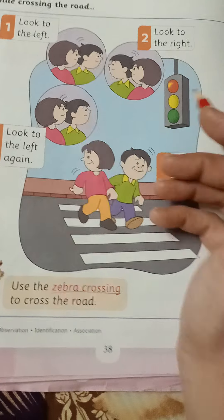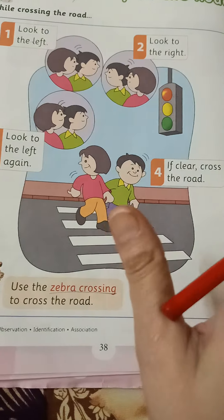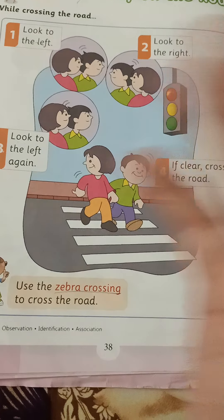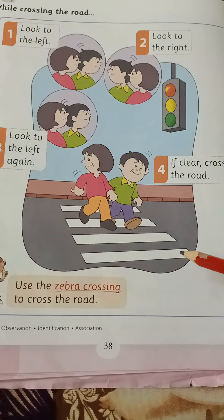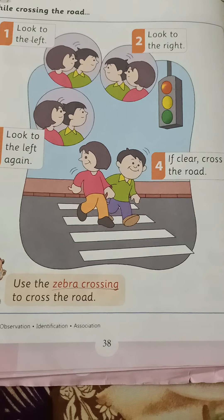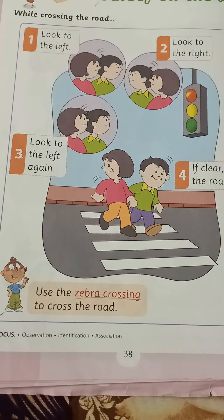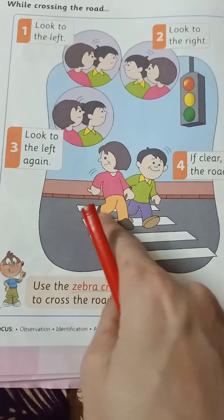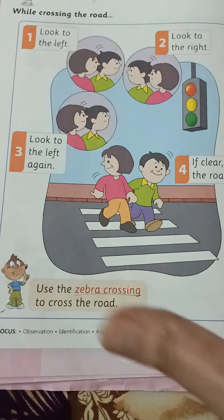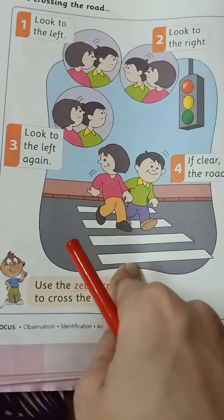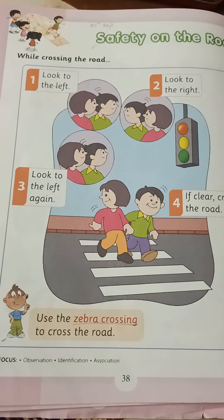When the red signal on the traffic light is on, no vehicles can pass through. That means the road will be clear, and you can cross at that time. One more very important thing: when you cross the road, always use the zebra crossing — the black and white stripes on the road. Always use the zebra crossing.